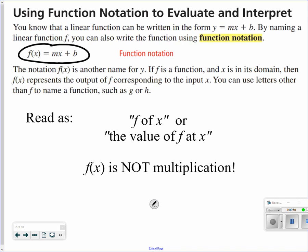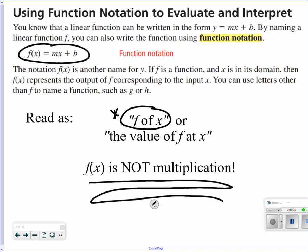A lot of times you'll use letters like f or g or h. You read that as f of x, or the value of f at x, but it is not multiplication. When I have something in function notation, f of 3, it is merely saying when I put 3 into the function. Then you'll calculate everything on that side by putting 3 into the function.